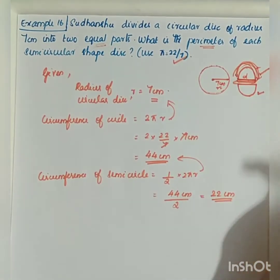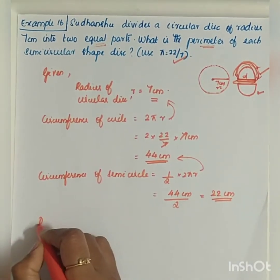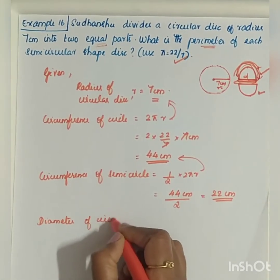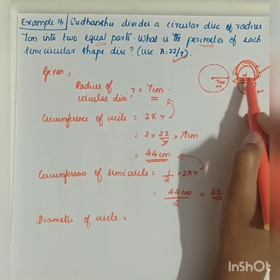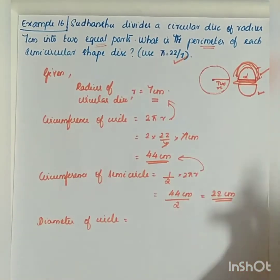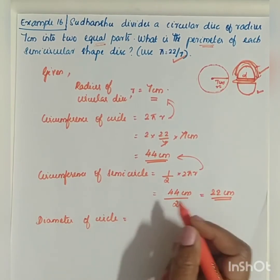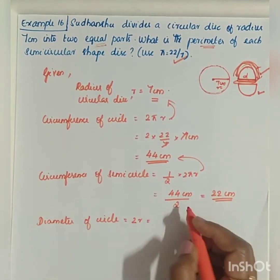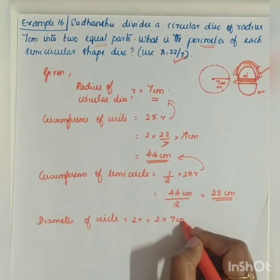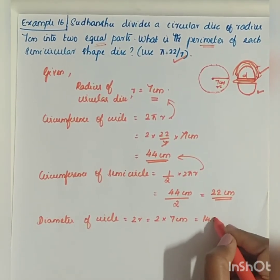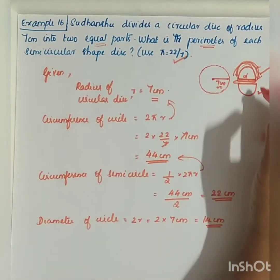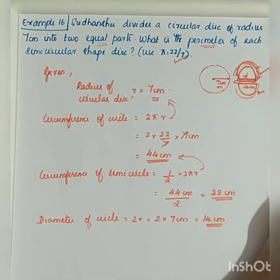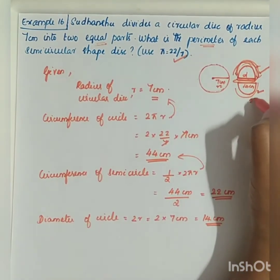Now we have to find out the diameter. The diameter of the semicircle is nothing but the diameter of the circle, which is equal to 2r. So, 2 into r, which is 7 cm, gives us 14 cm. The diameter is 14 cm.